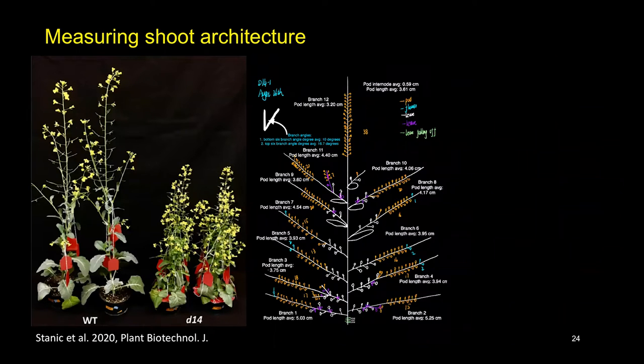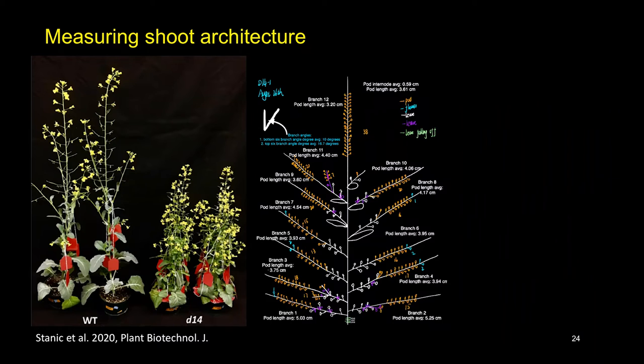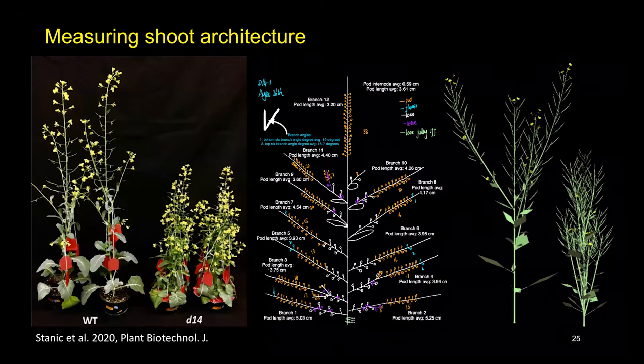One possibility is to measure the shoot architecture by hand using digital calipers or a hand digitizer. In collaboration with Marcus Samuel and the students from the University of Calgary, we measure the size of internodes, leaves, flowers, pods, and branching angles over time in a couple of wild-type plants and a mutant phenotype. Then we translated the measurements to a developmental computer model using L-systems. Measuring all the canola phenotypes in our dataset, however, would be a staggering task and probably would take as long as annotating the dataset itself.